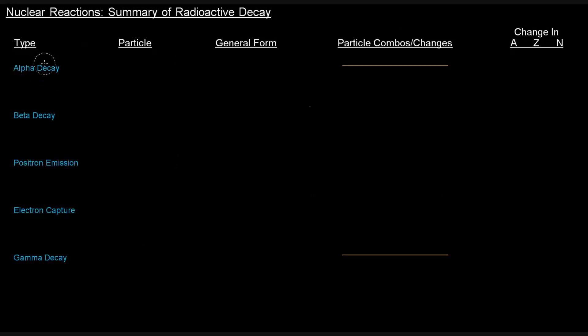Types of decay we talked about: alpha decay, beta decay, positron emission, electron capture, and gamma decay. Let's start with alpha decay.